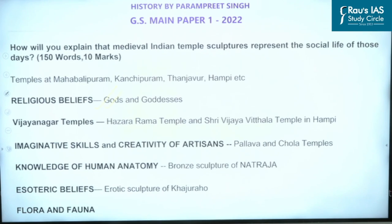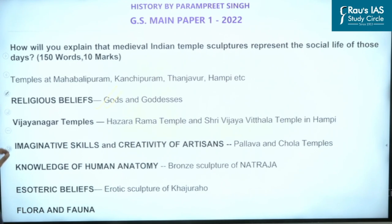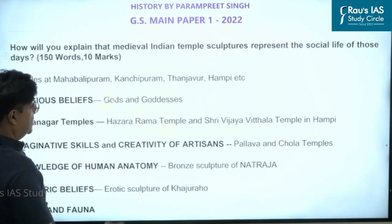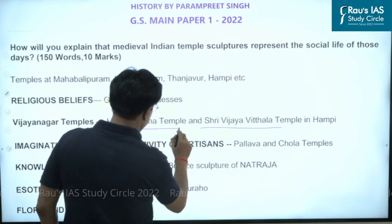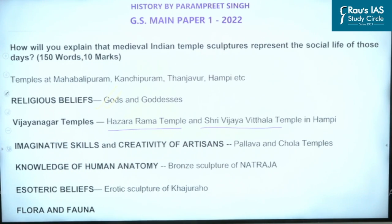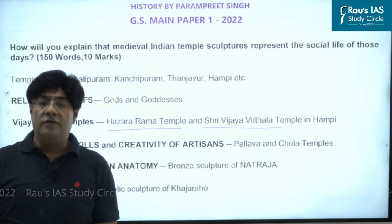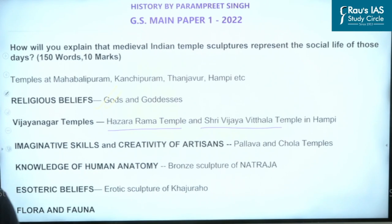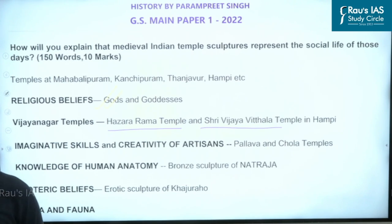One example we can quote is about the Vijayanagar temples. The Vijayanagar dynasty belonged to the medieval ages, and under their rulers many temples were constructed, especially in their capital. Two good examples are the Hazara Rama temple and the Shri Vijaya Vittala temple. The Hazara Rama temple is known by that name because on its walls we find images of Lord Rama and other gods associated with the Ramayana. From these temple sculptures we come to know about the religious beliefs and the gods and goddesses popularly worshipped at that time.